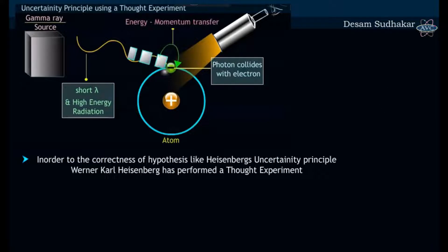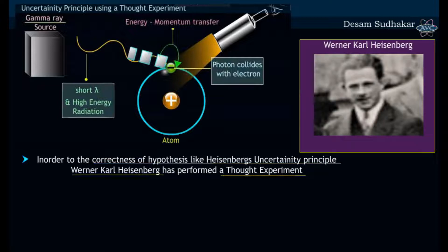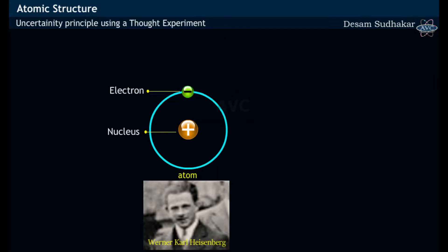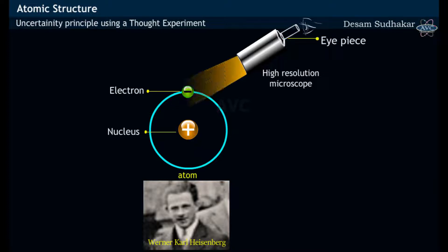In order to know the correctness of hypothesis like Heisenberg's Uncertainty Principle, Heisenberg has performed a thought experiment. In this thought experiment, a free electron is positioned beneath a high-resolution microscope provided with an eyepiece.